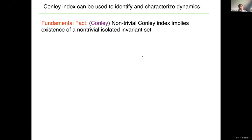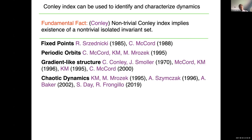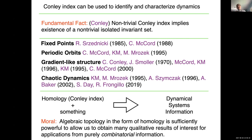A lot of what this talk is about is to try to identify attracting blocks — not from an analytic perspective, but from a computational perspective. I'd like you to think about having a combinatorial representation for attracting blocks, and if I have combinatorial representations in terms of cell complexes, then we're in the realm of combinatorial topology, which is something easily computable. The Conley index is really useful because it can identify and characterize dynamics. The fundamental fact due to Conley is that if something has a non-trivial Conley index, then there must in fact be a non-trivial isolated invariant set associated to it.